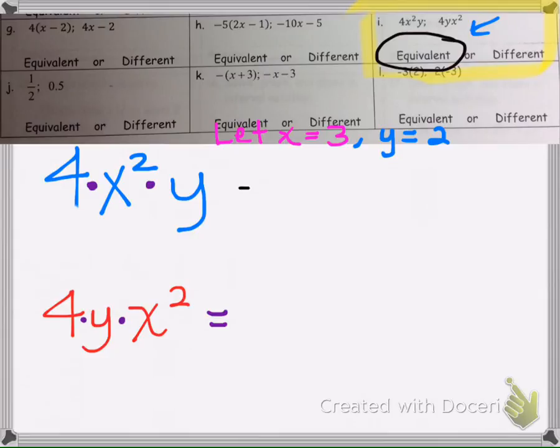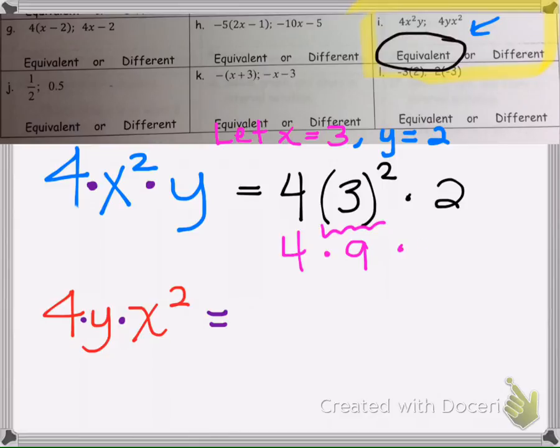So if we take a look here, if we do order of operations, we would multiply first, so that would be 9. And then if we have 4 times 9, that's 36. And 36 times 2 is 72.